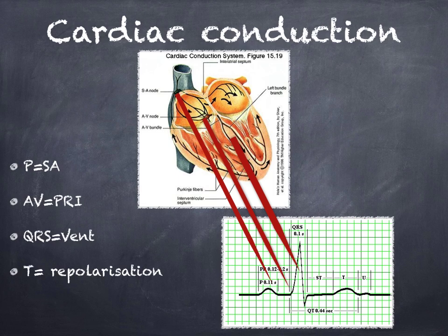Now let's look at cardiac conduction and the EKG. Here I have a basic EKG showing a normal rhythm. The first upward deflection is the P wave, which is associated with the SA node — under normal circumstances the primary pacemaker of the heart. The SA node fires, you see the P wave, and the wave of depolarization moves through the intranodal pathways throughout the atria, represented by the P wave and the P-to-R interval. After the P wave, there is a small pause.